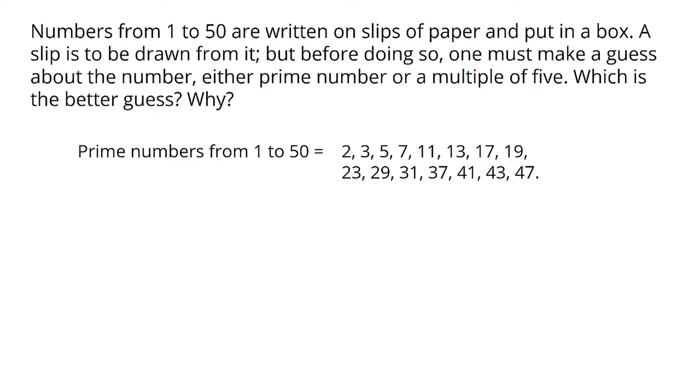How many prime numbers are there from 1 to 50? The total numbers are 50, and the prime numbers are 15.